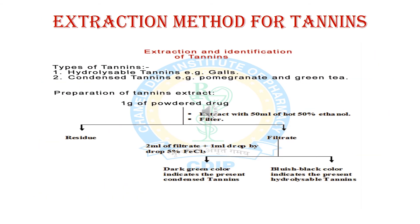Now we will discuss the extraction process for tannins. First, we take 1 gram of crude powder containing tannins and extract it with 50% ethanol, then filter it to obtain a residue and filtrate. The filtrate is then treated with 5% ferric chloride solution. A dark green color indicates the presence of condensed tannins, and a bluish-black color indicates the presence of hydrolysable tannins.